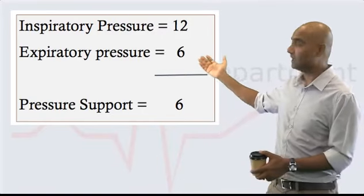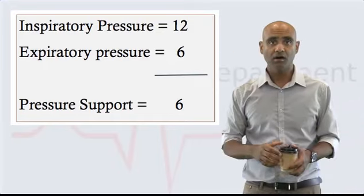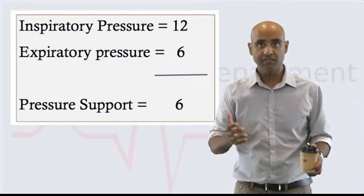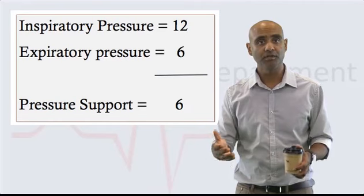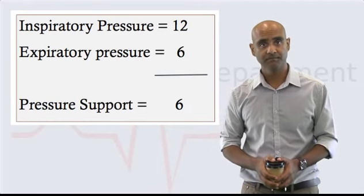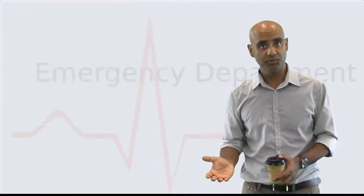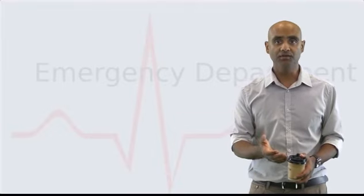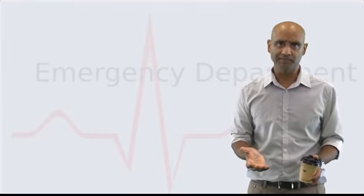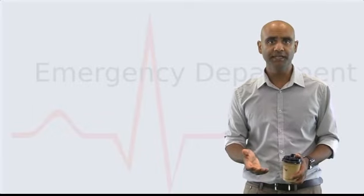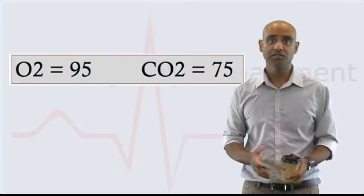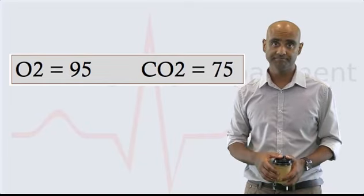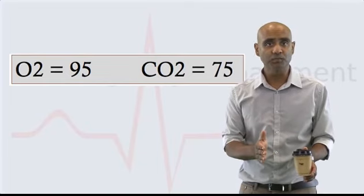So now he has an inspiratory pressure of 12 and an expiratory pressure of 6, giving him a pressure support of 6 centimeters of water. His O2 sats improve and his work of breathing decreases initially, but after an hour or so he looks like he's tiring, although he's no longer hypoxic. A repeat arterial blood gas shows a CO2 of 75.